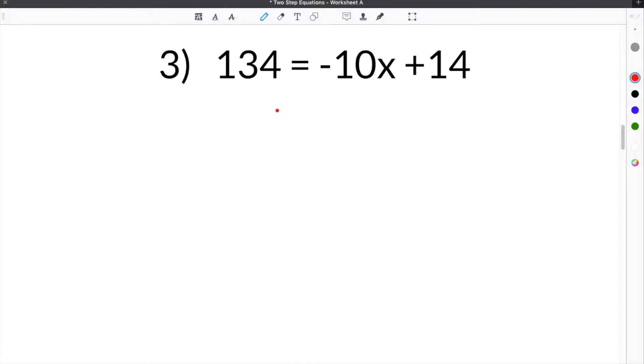So we're going to jump to number 3 on our two-step equations worksheet. Number 3 gives us 134 equals negative 10x plus 14. So once again, we have to get the negative 10x on one side of the equation and the constants on the other side. So we have to get rid of this plus 14 or we have to move the plus 14 over to this side.